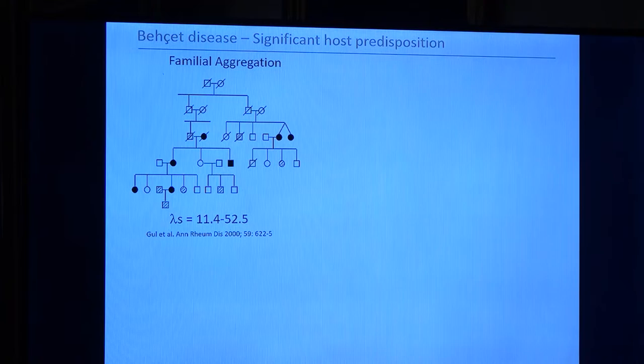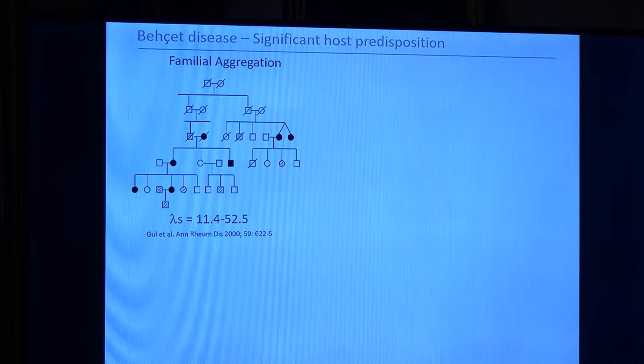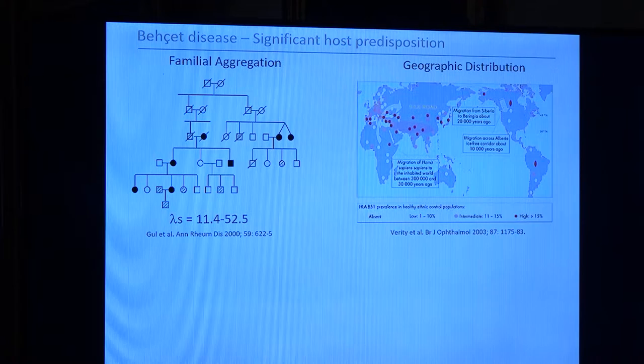This hyperinflammatory response is strongly associated with a genetic background. We have families with strong familial aggregation — family history is seen in about 18% of patients, and the lambda-s value was calculated between 11 to 52, which is quite high for a complex disease. A second clue for genetic contribution comes from its geographic distribution. It is quite common in eastern Mediterranean countries, going along the Silk Road up to China, Korea, and Japan, with the highest prevalence reaching up to 4 in 1,000 in Turkey.